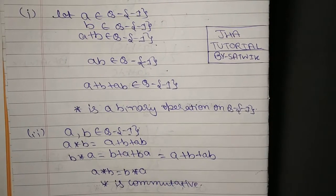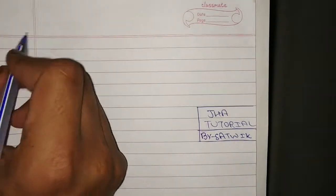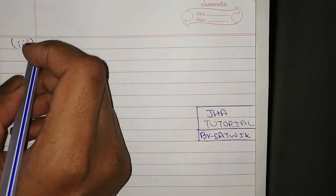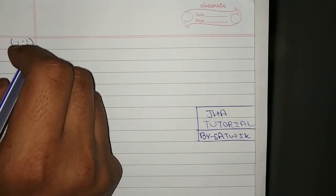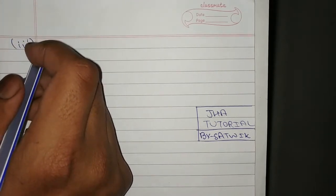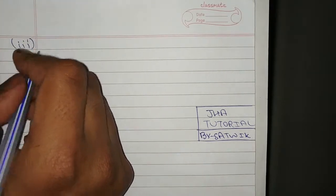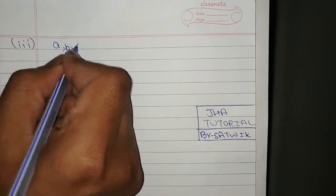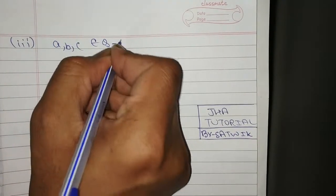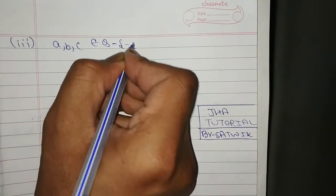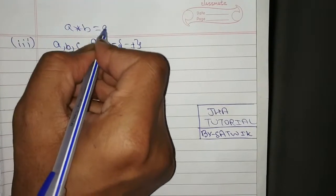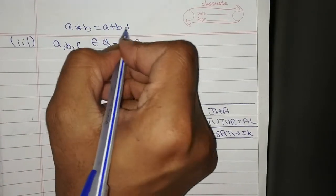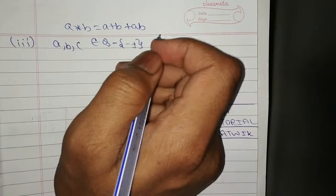Third part: prove that star is associative. Let a, b, c belong to Q\ {-1}. The binary operation is a★b = a+b+ab. Now compute (a★b)★c: a★b = a+b+ab, then (a★b)★c means replacing a with (a+b+ab) and b with c.